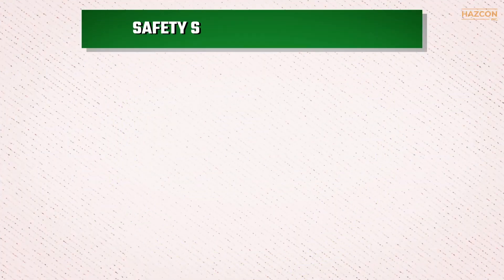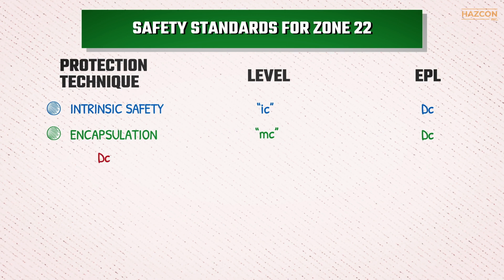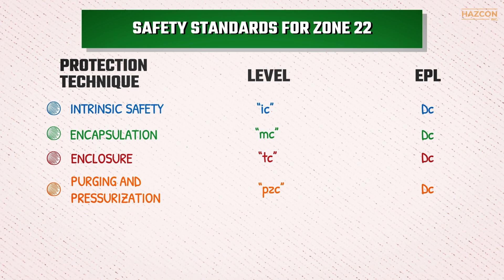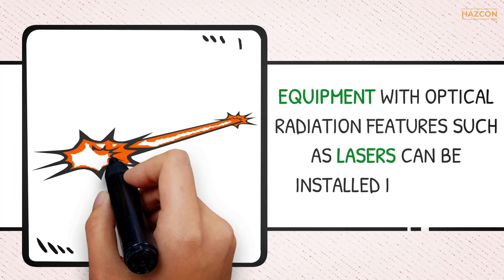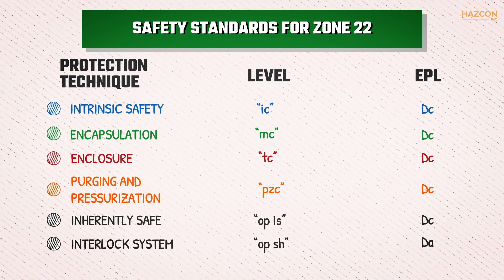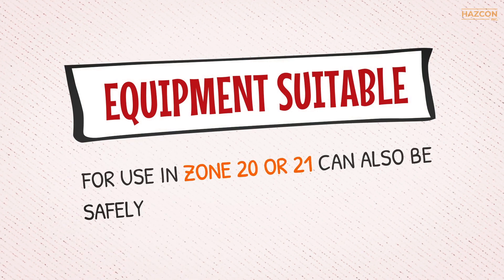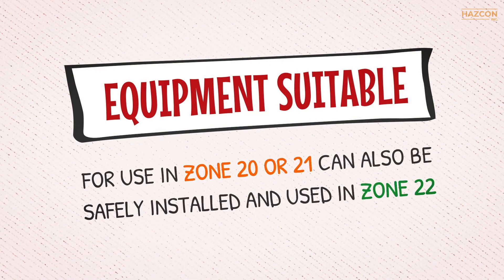In order to be certified as compliant with safety standards for Zone 22, an electrical device must be protected by one or more of the following protection techniques: intrinsic safety with level of protection ic, encapsulation with mc protection, protection by enclosure with tc protection, and purging and pressurization with pzc. Additionally, equipment with optical radiation features such as lasers can be installed in Zone 22 if the optical power is inherently safe using opis protection, or an interlock system complying with opsh protection, or using protected optical radiation complying with oppr, with an equipment protection level EPL of dc. Equipment suitable for use in Zone 20 or Zone 21 can also be safely installed and used in Zone 22.